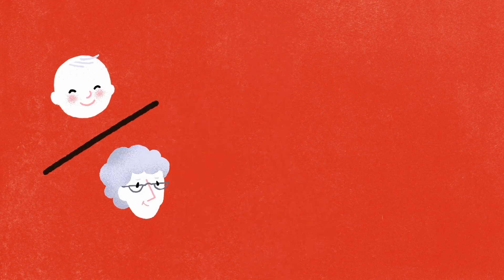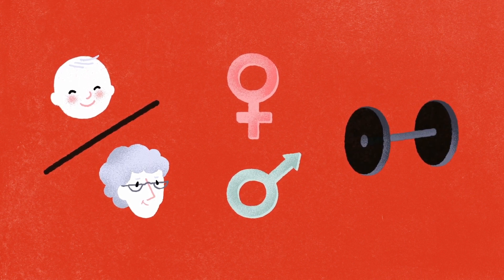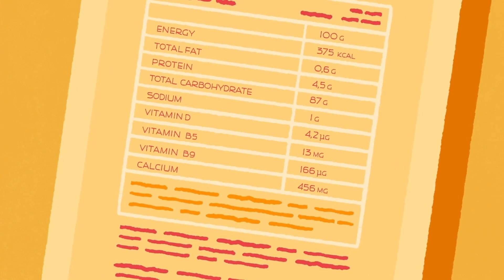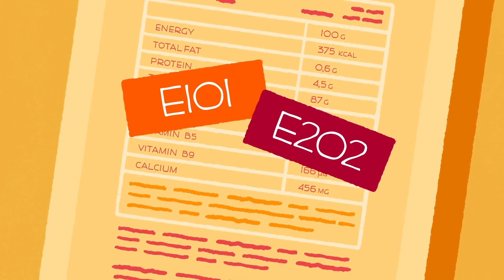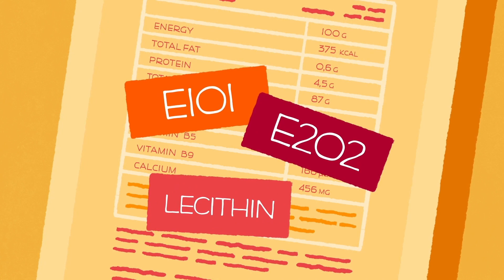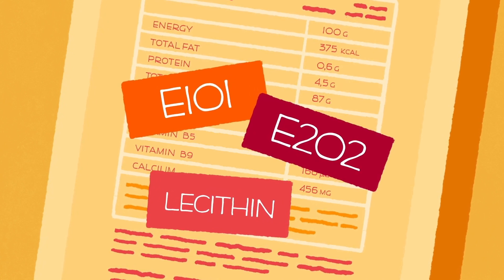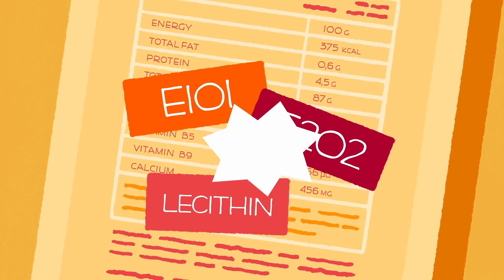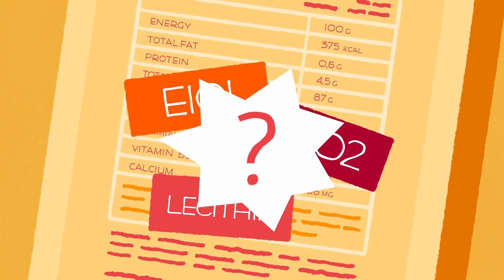Did you know we need different amounts of all these nutrients depending on our age, our gender and our physical activity? But that's not all. E-101, E-202, lecithin — you've probably already encountered these mysterious names on your food labels.